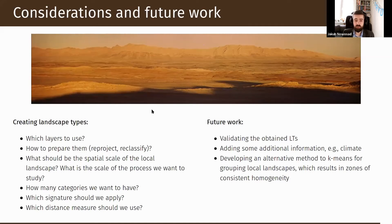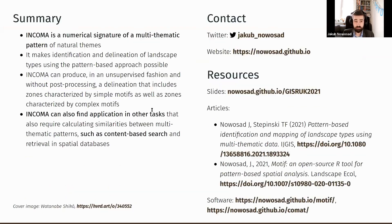In my future work I plan to validate those landscape types, think about how to add additional information, and explore how to group them in a way that makes them more consistent in terms of homogeneity — thinking about landscape type 7. I also want to guide the answers to the methodological questions. To sum up, I wanted to present the numerical signature of multi-thematic patterns called ICoM, which allows us to describe patterns of many categorical variables at the same time, create maps of landscape types, search for areas with similar multi-thematic patterns, and find changes in multi-thematic patterns.